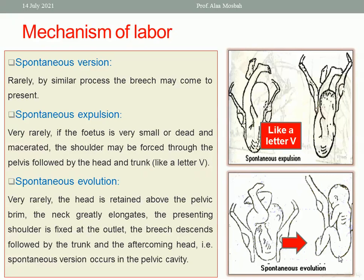Or spontaneous evolution, which is also very rare: the head is retained above the pelvic brim, the neck elongates greatly, the presenting shoulder is fixed at the outlet, the breech descends down, followed by the trunk and after-coming hip. This is called spontaneous version inside the pelvic cavity — spontaneous evolution.